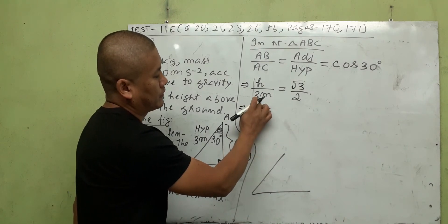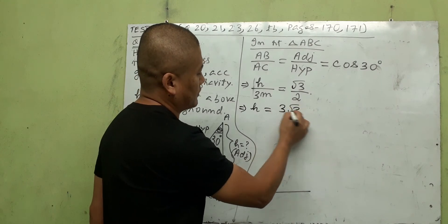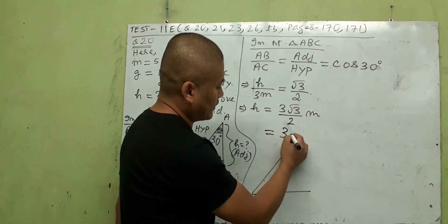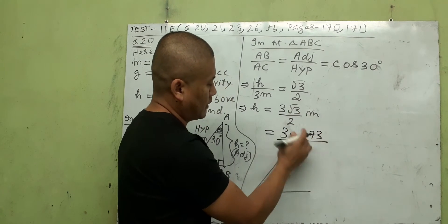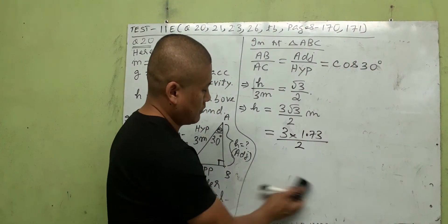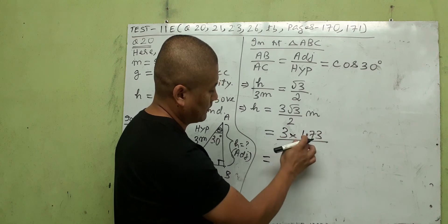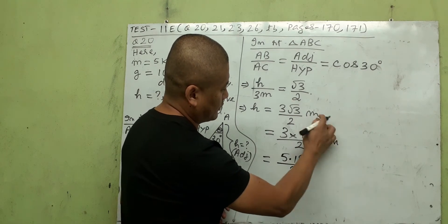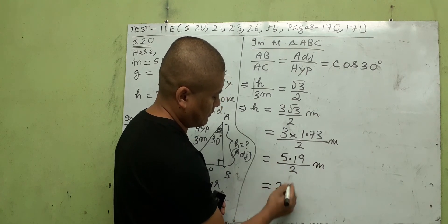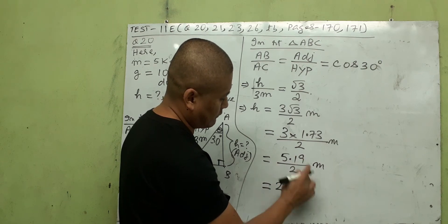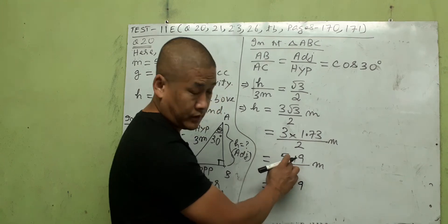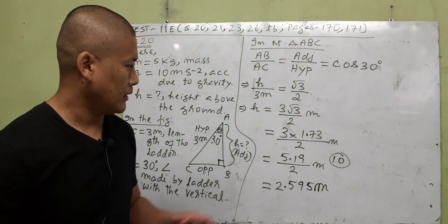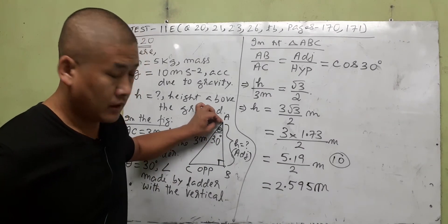To find h, we move the denominator up: h equals 3 times root 3 divided by 2. The approximate value of root 3 is 1.73. So h equals 3 times 1.73 divided by 2, which gives 5.19 divided by 2, approximately 2.595 meters. That is the height above the ground to which the concrete block was carried.